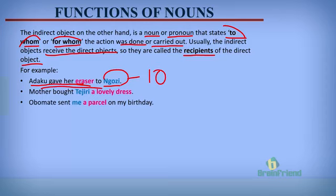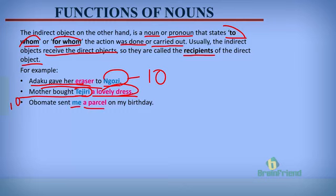Mother bought Tejiri a lovely dress — for whom did mother buy a lovely dress? For Tejiri. So Tejiri is the indirect object. Obomate sent me a parcel on my birthday — to whom was the parcel sent? It was sent to me. So me is the indirect object. The indirect object states to whom or for whom an action was done or carried out.